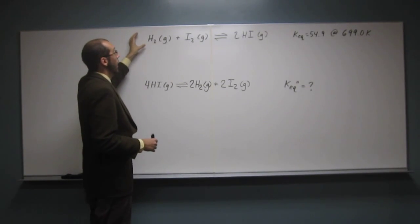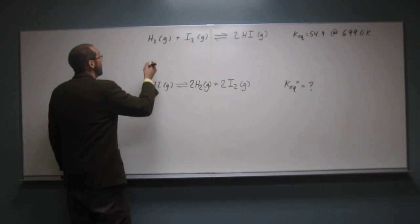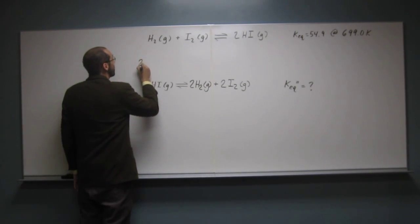So we're going to keep it the same way. We're not going to flip it yet, but we're going to multiply everything by 2. So let's figure out what the equilibrium constant for this reaction is.